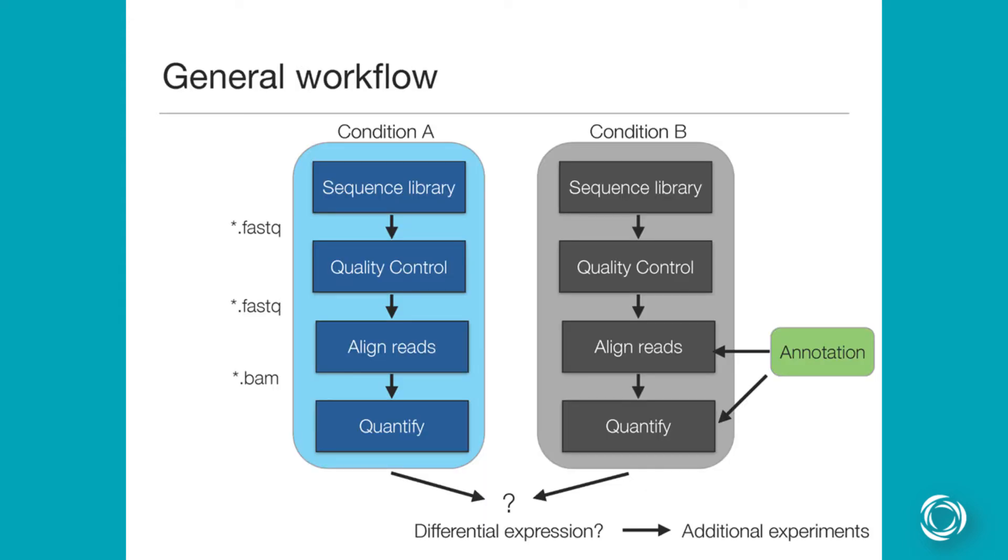So the general workflow is usually like this. At least this is the classic workflow that most people employ. You have two basic conditions, condition A and condition B. This might be some control and some treatment. And then you generate, you create some sort of a sequence library with some standard prep.